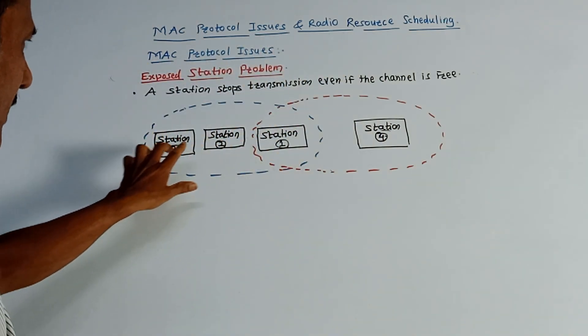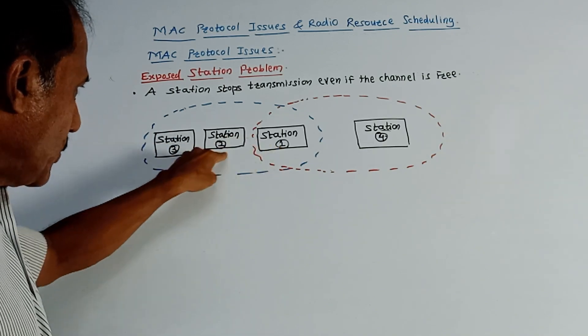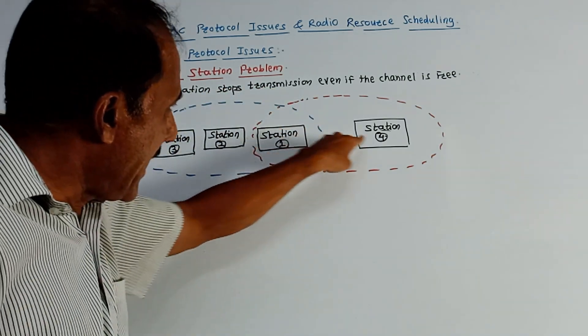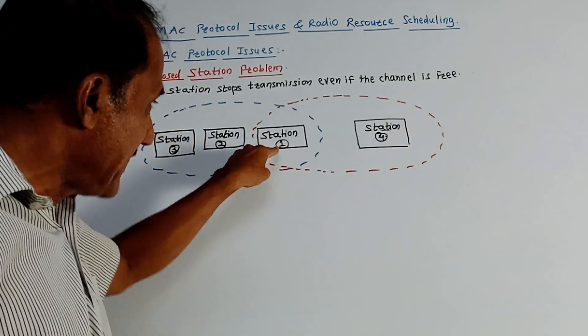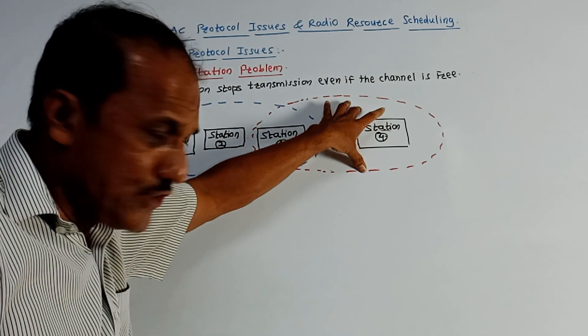Consider this situation. Here we have shown four stations: station 1, 2, and 3 are in the same range. Then station 1 and 4 are again in the same range. That means station 1 is common for this part as well as for station 4.